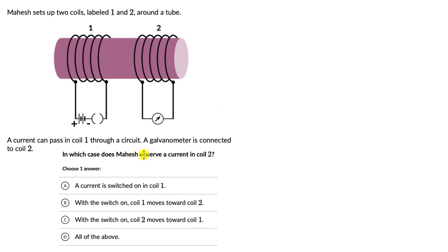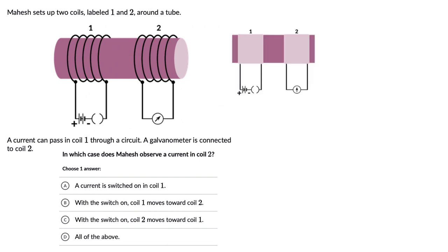We have two coils, one and two, with a circuit around coil one and a galvanometer connected to coil two. A galvanometer measures changes in current — if there is a current flowing in coil two, we will see the needle move. We need to figure out in which case Mahesh observes current in coil two.